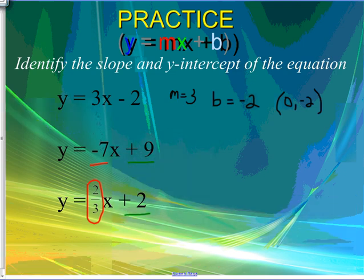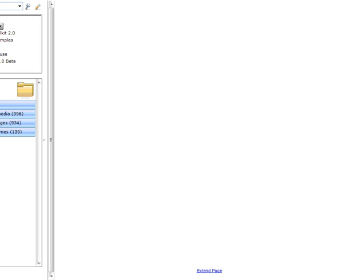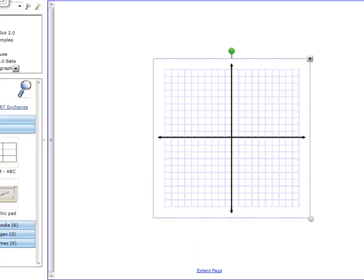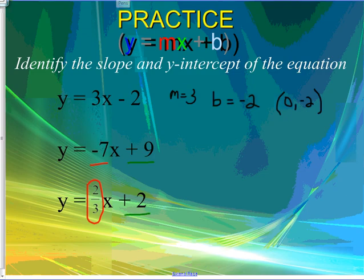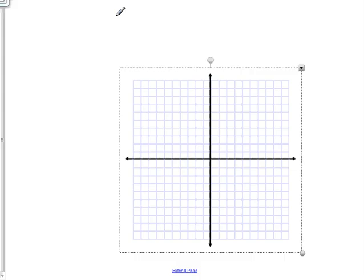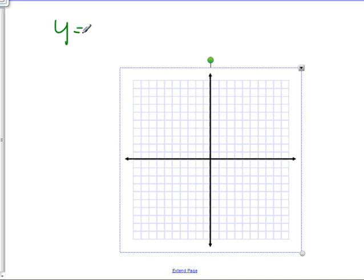So what I'm going to do here is I'm actually going to show you now how to take y equals 3x minus 2. And I'm actually going to help you graph it. So I'm going to get our graph right here, and I know my equation is y equals 3x minus 2. So I'm going to go on here, and I'm going to say y equals 3x minus 2.